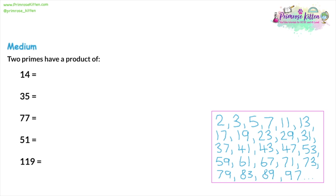Moving on to the medium questions, we're going to find two prime numbers whose product equals a given number. Product just means multiplication. If two numbers multiply to make an answer, those numbers also divide into the answer — that's our method. For the first question, 14: if we find one prime that divides into 14, the answer gives us the other prime. 14 is even, so it can be divided by 2. 14 divided by 2 is 7, which is also a prime number. So 2 and 7 is our answer.